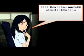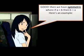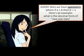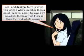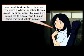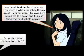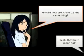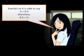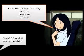Good, then we have symmetric, where if a equals b, then b equals a. Here's an example. What is the decimal form of one over two? One over two — that's written like this, a half, right? Yep, and decimal form is when you write a whole number, then a decimal point, followed by numbers to show it is less than the next whole number. One over two in decimal form is 0.5. Now, are one over two and 0.5 the same thing? Yeah, they both mean half. Exactly, so it's safe to say that one over two equals 0.5, therefore 0.5 equals one over two. So 0.5 and one over two are symmetric.